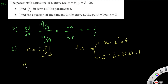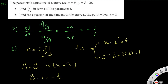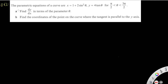The equation of the tangent is y minus y₁ equals m(x minus x₁), where (x₁, y₁) is the point on the curve. Substituting gives y minus one equals negative one-half times (x minus four), which is the equation of the tangent.